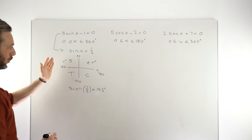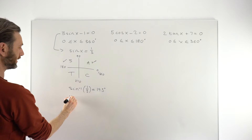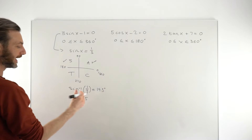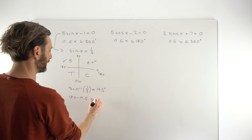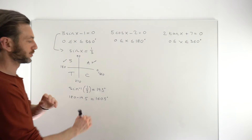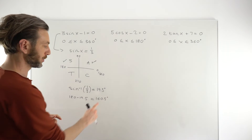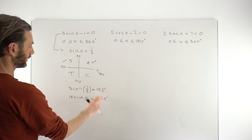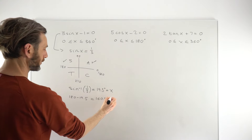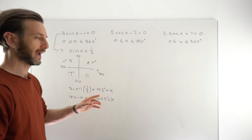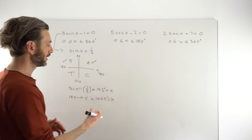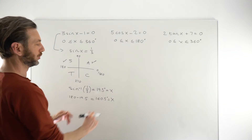To get the solution in the second quadrant, we do 180 minus the first answer, because we're going backwards. So it's 180 minus 19.5, which gives 160.5 degrees. There's a lot of use of the first solution to get successive solutions in these questions. Remember to always put degrees on your answers. Both solutions are in the correct quadrants, so we can assign these as our values of x.